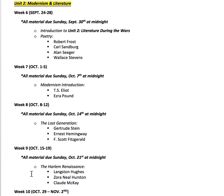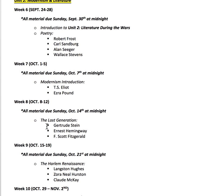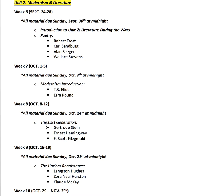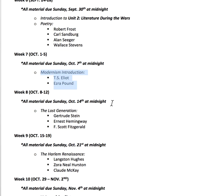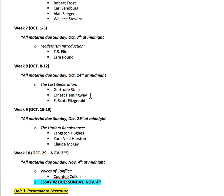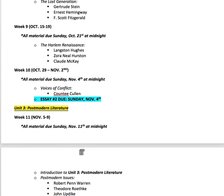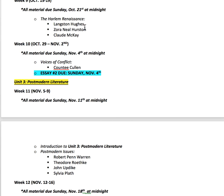Weeks six, seven, eight, and nine will focus on moving us into the war years. We'll look at early World War I authors and some poetry, then modernism with T.S. Eliot and Ezra Pound. Then we'll look at the Lost Generation: Gertrude Stein, Hemingway, and Fitzgerald. And lastly, we'll look at the Harlem Renaissance, covering Langston Hughes, Zora Neale Hurston, and Claude McKay.